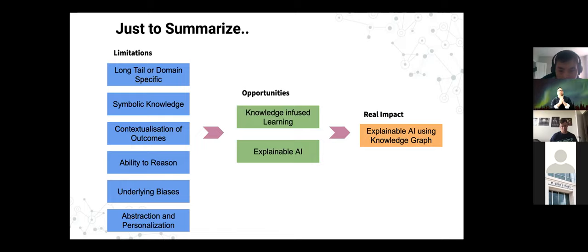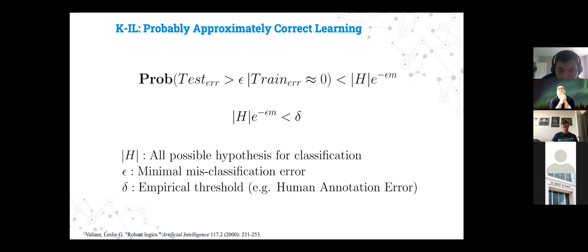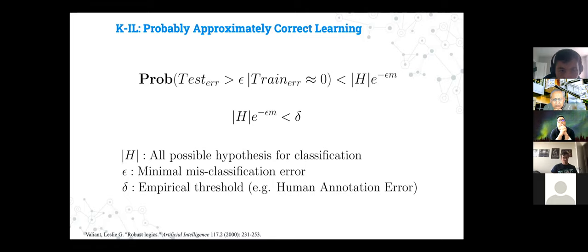That's where we have the opportunity of utilizing knowledge-infused learning and achieving explainability in AI — that's where we formulated this tutorial of explainable AI using knowledge graphs. I'll give you the math behind what I've talked about. I gave you a lot of examples and applications where knowledge graphs and machine learning go pretty well together — let's walk through some of the math behind why we arrived at this situation.